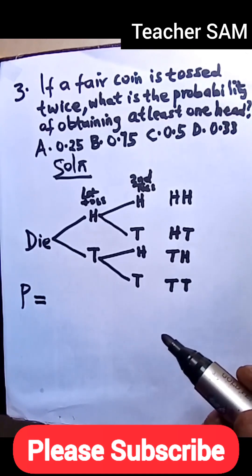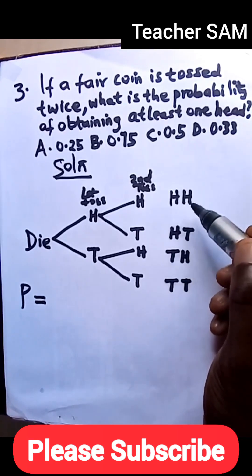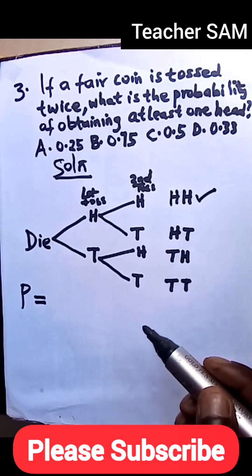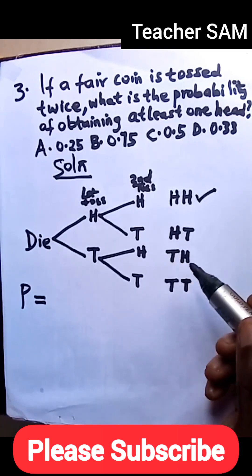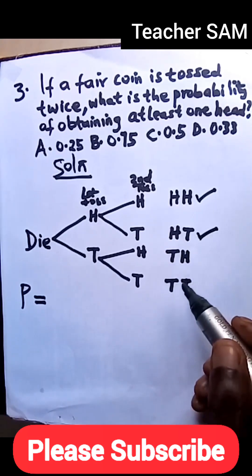Now let's look at the number of results that have at least one head according to the equation. At least one head: here we have two heads, so this satisfies the condition of the equation. At least one head, so we have two heads, so at least one head. Here we have one head and one tail, so at least one head. This also satisfies.